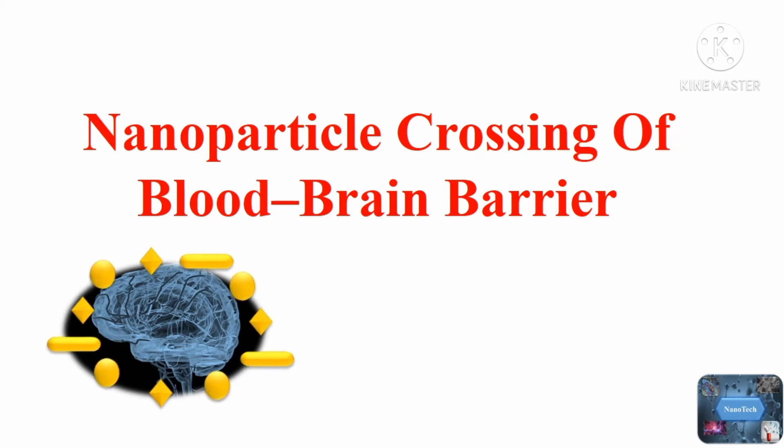Our brain is protected by two major barriers. One is the blood-brain barrier, which is a dynamic barrier protecting the brain against invading organisms and unwanted substances. In this section, I will explain some basics about the blood-brain barrier, different strategies to deliver drugs to the brain, and finally nanoparticles crossing of the blood-brain barrier.